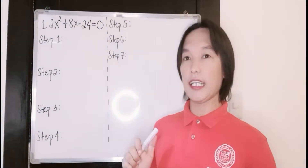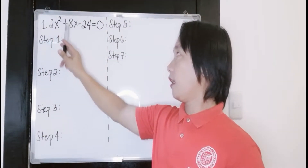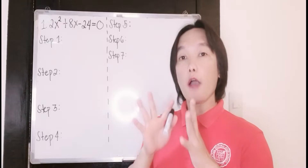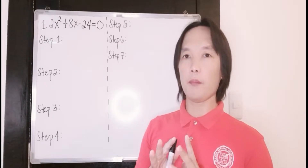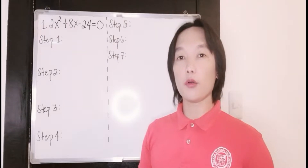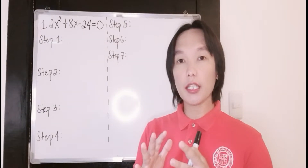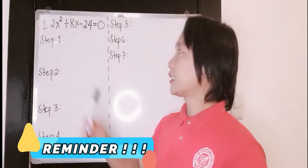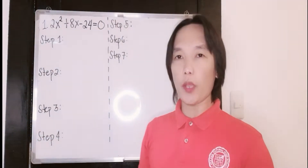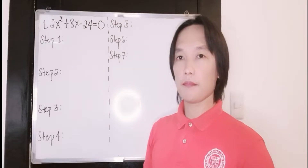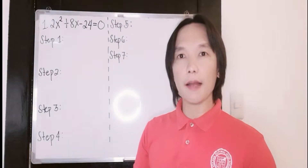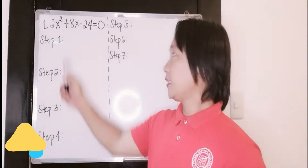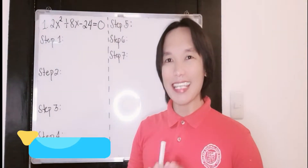Here we have an example: 2x squared plus 8x minus 24 equal to 0. Now for you to be able to solve this using completing the square, we are going to follow a step-by-step process. First, check if your quadratic equation is in the standard form. As you can see, our example is already in the standard form. What we are going to do now is to make our quadratic term equal to 1.